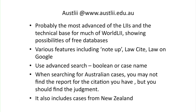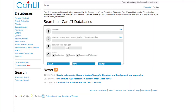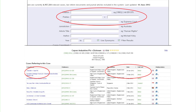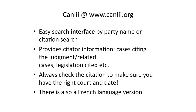Another fairly comprehensive site is CanLII, which is the Canadian Legal Information Institute. This has a slightly different interface than the other legal information institutes, and you can actually search by party name or citation search. It also has citator information — cases citing judgments, and also related cases and legislation — which is a little bit more advanced than some of the other sites. Again, as with Australia, it's worth checking the citation to make sure you have the right court and date. It's also worth noting there's a French language version on the Canadian site.